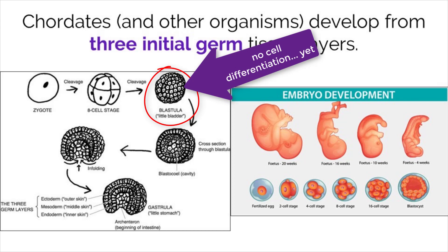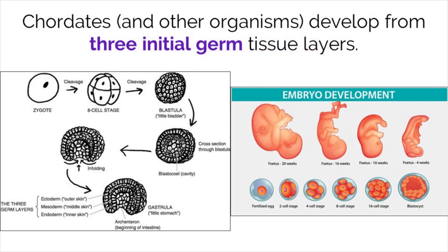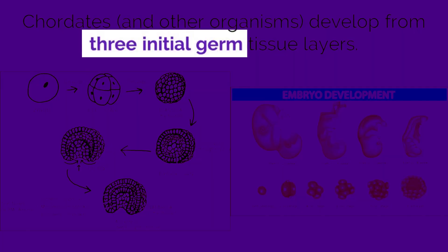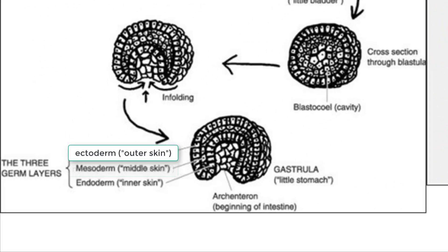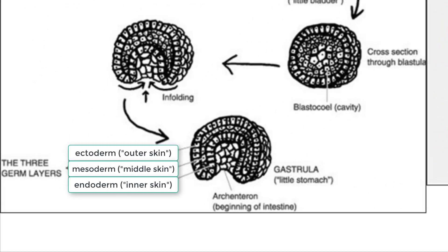Meaning we have no specific cell types like neurons, muscle cells, or bones — all of the cells just exist without any differentiated function. As we continue to develop, the cells begin to fold and create three different layers, called ectoderm, mesoderm, and endoderm, which begin to form tissues that later become the different systems of the body.